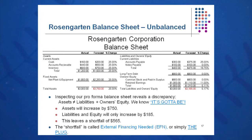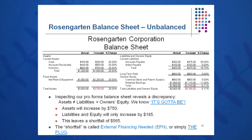On the right side, accounts payable were $300 — they grow with sales, so multiply by 1.25. Notes payable were $100 and stay at $100. Long-term debt was $800 and stays at $800. Common stock was $800 and stays at $800. Retained earnings were $1,000, and we add the $110 from the income statement, making it $1,110. I add up the right side: 375 + 100 + 800 + 800 + 1,110 = $3,185. My balance sheet is out of balance — assets of $3,750 do not equal liabilities plus equity of $3,185.